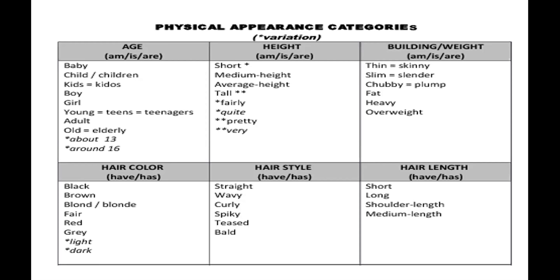To talk about build or weight: thin equals skinny. Slim or slender means in good shape. Chubby or plump means a little overweight. Fat means gordito. Heavy means pesado. Overweight means con sobrepeso. For hairstyle, we say he/she has or I have curly hair, straight hair — straight means liso — or wavy, which means ondulado. Bald means calvo. Hair length: short, long, shoulder-length, or medium length.